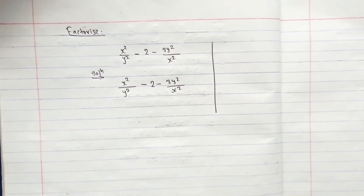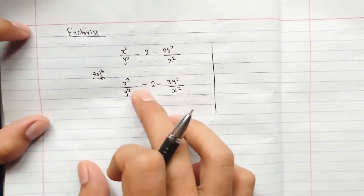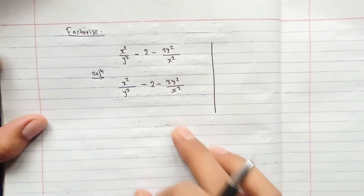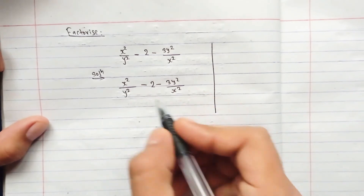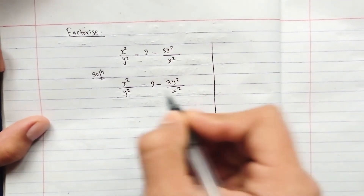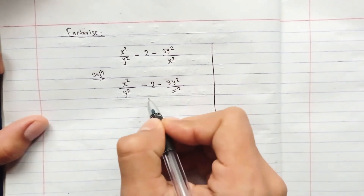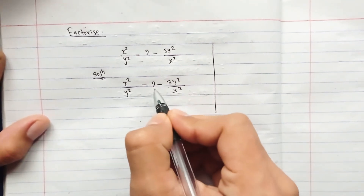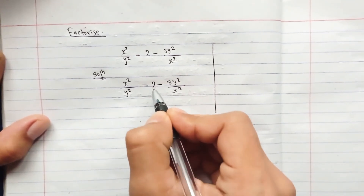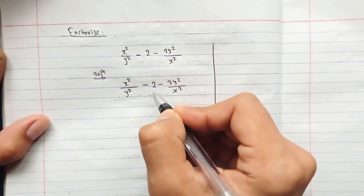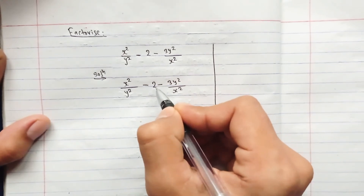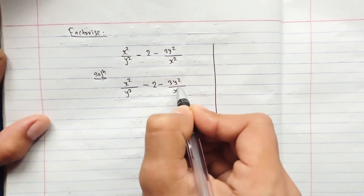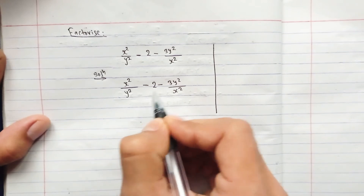Hello, today I have a numerical from algebra to factorize. It seems difficult but it is a tricky question. We can factorize this by the first-into-last method. In this method, we arrange the numbers such that the sum is equal to the middle term and the product is equal to the product of the first and last terms.